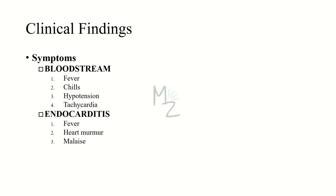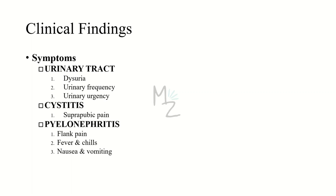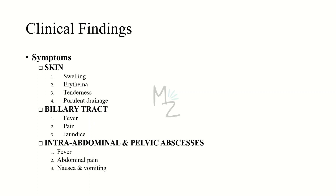Different diseases have different symptoms. Bloodstream infections present with fever, chills, hypotension, and tachycardia. Endocarditis presents with fever, heart murmur, and malaise. Urinary tract infections present with dysuria, urinary frequency, and urgency. Cystitis shows suprapubic pain. Pyelonephritis presents with flank pain, fever and chills, nausea and vomiting. Skin infections show swelling, erythema, tenderness, and purulent discharge. Biliary tract disease presents with fever, pain, and jaundice. Intra-abdominal and pelvic abscesses present with fever, abdominal pain, nausea, and vomiting.